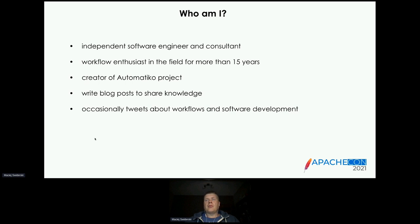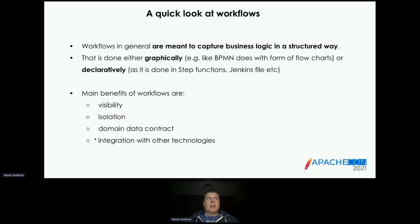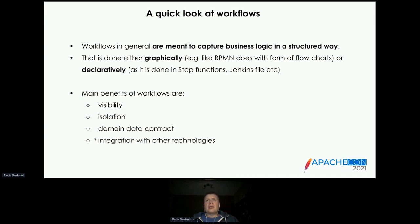I occasionally write blogs and tweet about boxes and software development. Since the presentation is around workflows powered by Apache Cassandra, let's start with a bit of theory. Workflows look at business logic from end to end rather than individual fragments. They are used to define business needs and requirements when building applications. Workflows can be defined in different formats — graphical ones like BPMN (Business Process Modeling Notation), or declarative ones like Serverless Workflow, Step Functions, Jenkinsfile, or GitHub Actions.